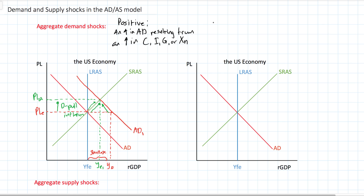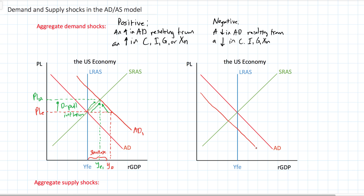A positive demand shock occurs when aggregate demand increases. A negative demand shock occurs when there is a decrease in AD resulting from a decrease in consumption, investment, government spending, or net exports. For example, if interest rates rise in the economy, firms demand less new capital equipment and technology, causing a decrease in private sector investment. Falling investment means that at every price level there will be a smaller quantity of goods and services demanded.